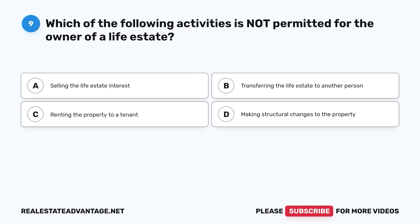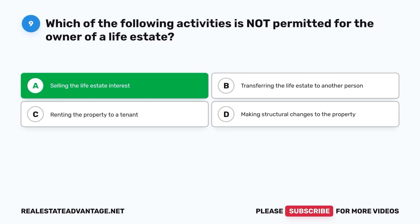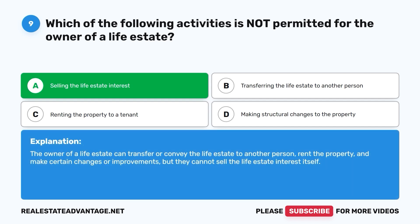Question 9: Which of the following activities is not permitted for the owner of a life estate? A. Selling the life estate interest. B. Transferring the life estate to another person. C. Renting the property to a tenant. D. Making structural changes to the property. The correct answer is A, selling the life estate interest. The owner of a life estate can transfer or convey the life estate, rent the property, and make certain improvements, but they cannot sell the life estate interest itself.